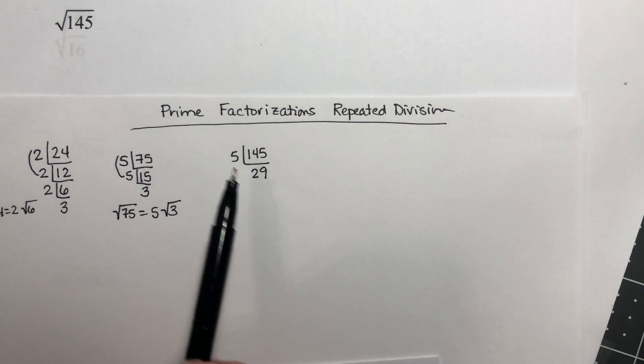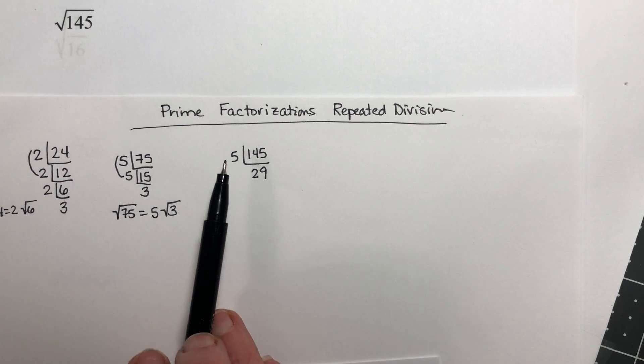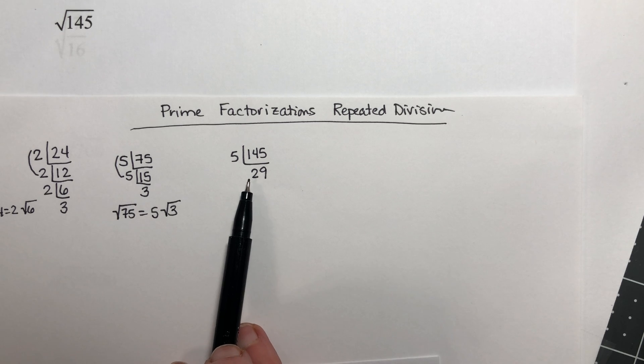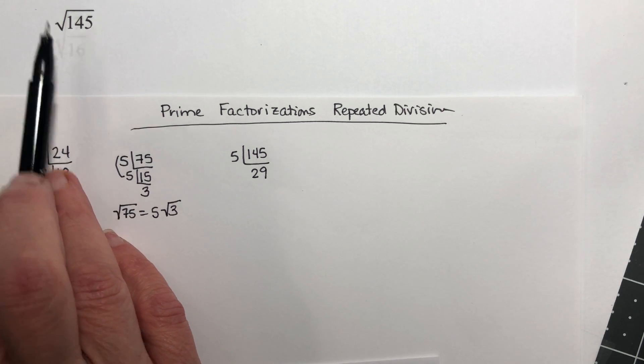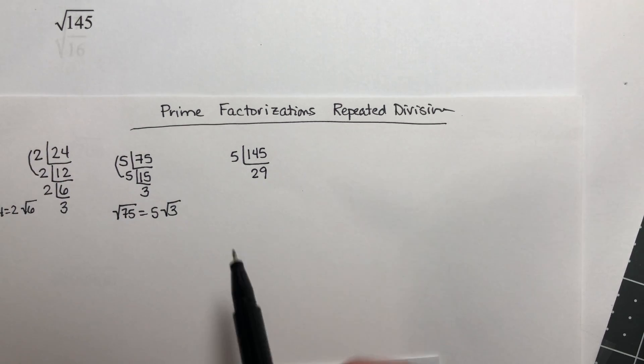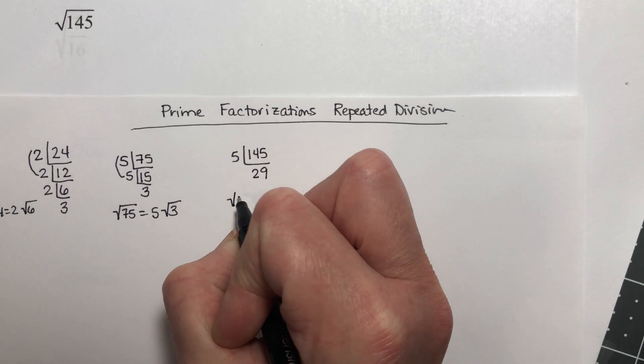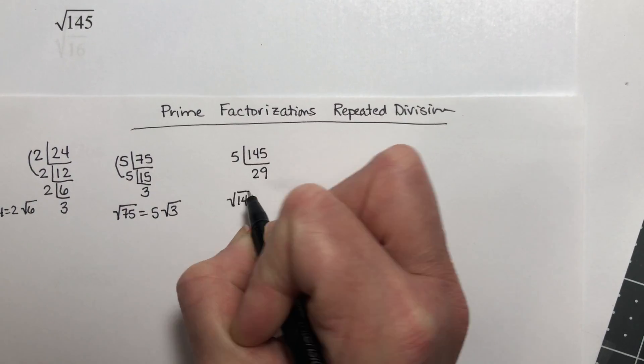So this is the prime factorization. I'm looking for a square root, so I'm looking for pairs, but I don't have any pairs. The square root of 145 does not simplify.